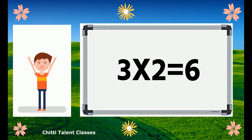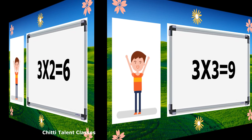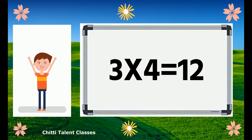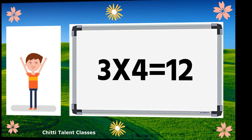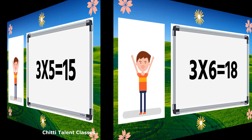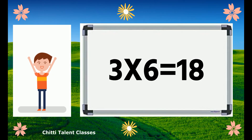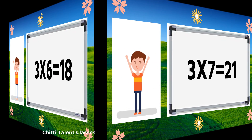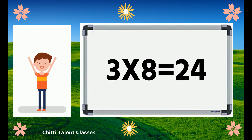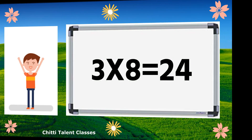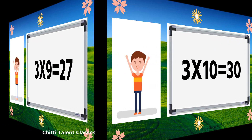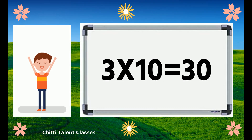Three 2s are 6. Three 3s are 9. Three 4s are 12. Three 5s are 15. Three 6s are 18. Three 7s are 21. Three 8s are 24. Three 9s are 27. Three 10s are 30.